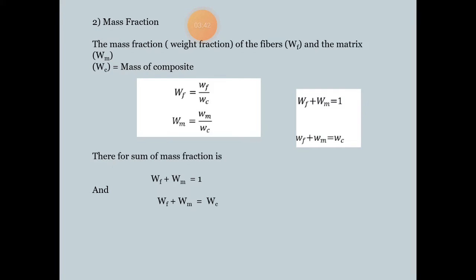The second topic is mass fraction, also called weight fraction. W_F and W_M are the weight fractions of the fibers and matrix respectively, and W_C is the mass of the composite. W_F equals small w_F divided by W_C, and W_M equals small w_M divided by W_C. Therefore, W_F plus W_M equals 1, and w_F plus w_M equals W_C.